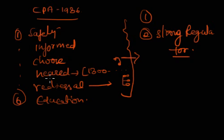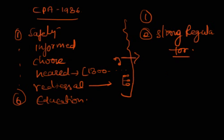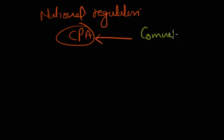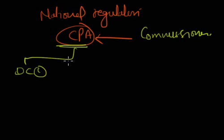Here, there would be a national regulator, and the name of this national regulator would be Consumer Protection Agency, CPA. The CPA would be headed by a commissioner. This commissioner would have five deputy commissioners.